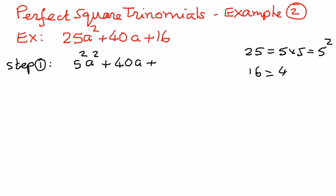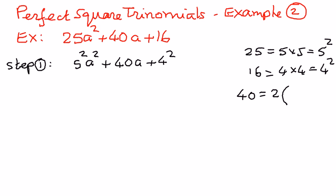I want to write 16 as 4 times 4, which is 4 to the power of 2. And 40, I can also write as 2 times 5 times 4, because 2 times 5 is 10, and 10 times 4 is 40.